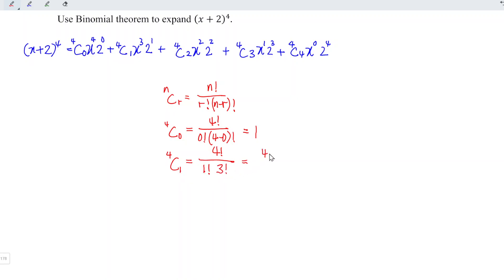And this is equal to 4 times 3 times 2 times 1 divided by 1 times 3 times 2 times 1. So we can cancel and simplify, so this is equal to 4, and so on for the rest of the values.